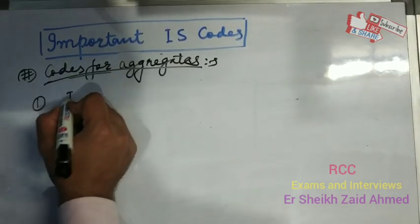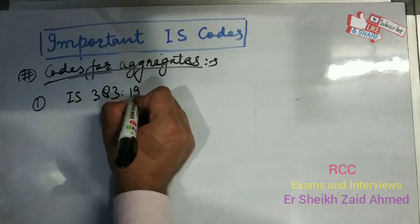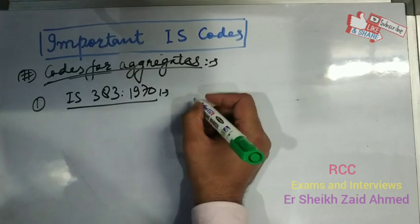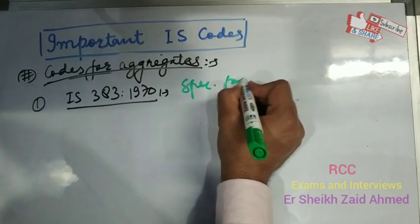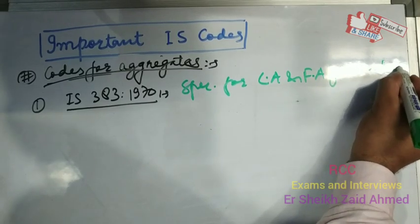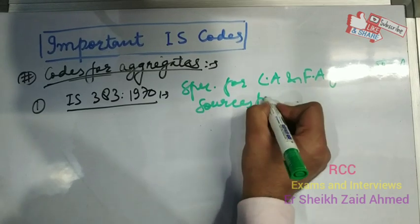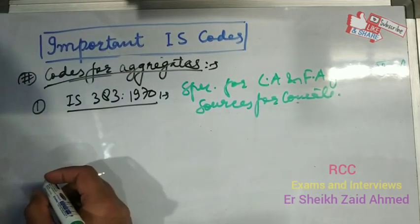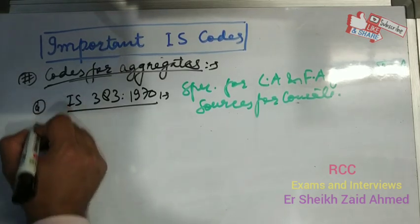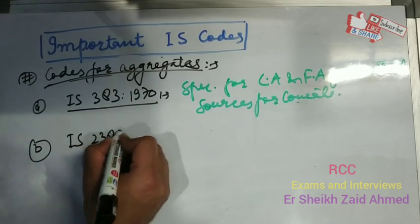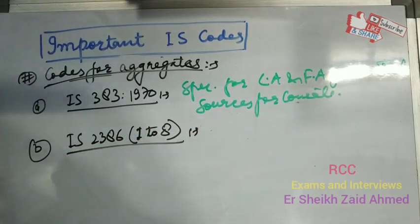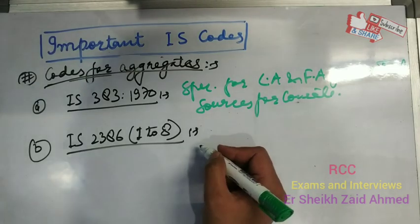Now we will see some codes for aggregates. The first one is IS-383-1970, which is regarding the specification for coarse and fine aggregates from natural sources for concrete. The next is IS-2386, which has Parts 1 to 8. These codes of practice are for methods of testing of aggregates for concrete.